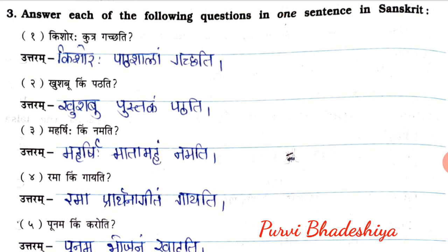Third exercise: answer each of the questions in one sentence in Sanskrit. First: Kishoraha Kutra Gachati — the answer is Kishoraha Paatshalaam Gachati. Second: Khushbu Kim Patati — the answer is Khushbu Pustakam Patati. Third: Maharshiha Kim Namati — the answer is Maharshiha Matamaham Namati.